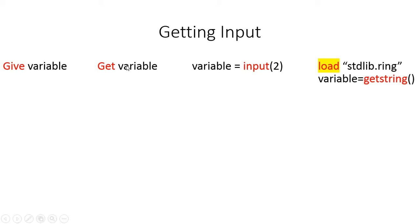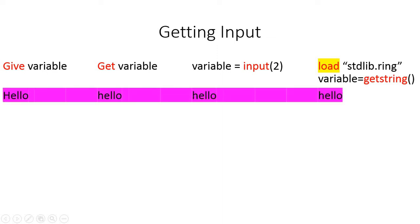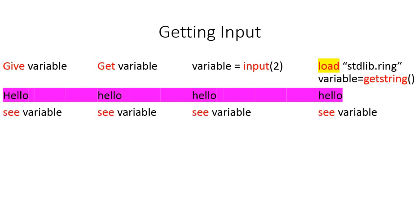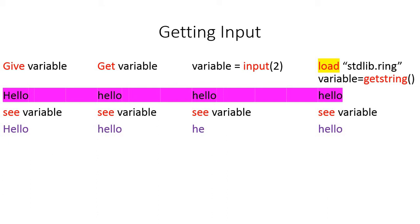Whichever input command you use, Ring will ask you to provide input. For example, if you type 'hello' but have specified length 2 with the input command, when you print the variable it will only print two characters, because the length is set to 2.